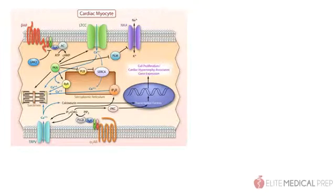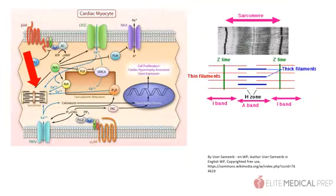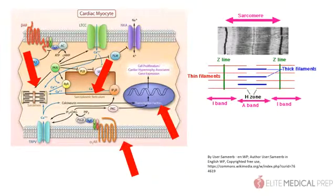However, while the number of myocytes doesn't increase, there's hyperplasia of the cellular components of the cardiac myocyte. Structures such as mitochondria and components of the sarcomere increase in number. Increased protein production relies on genetic upregulation, which also occurs.